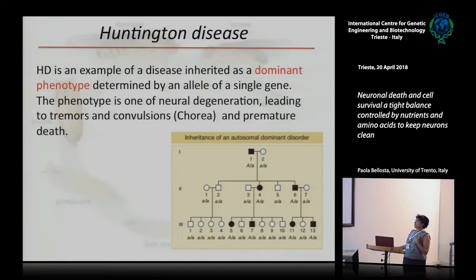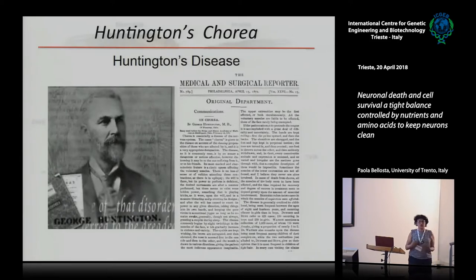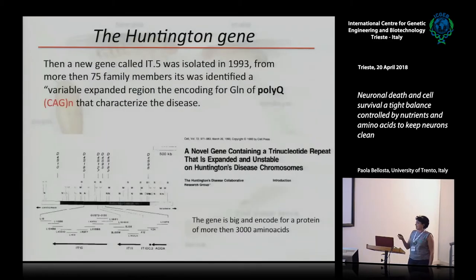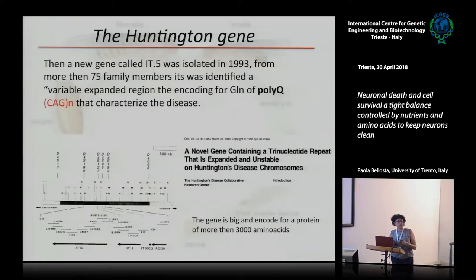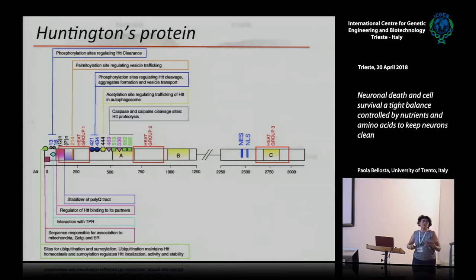A few words about Huntington's disease. It is a dominant genetic disease known since 1872, when Dr. Huntington noticed that some patients had this strange movement — chorea, like a dance. More than 100 years later the gene was identified. They found that specifically in Venezuela there were families with very high incidence of this disease, and they understood that the gene — and the protein from these patients — contained a poly-Q repeat that was very long compared to normal. In our case we normally have around 35 CAG repeats in the C-terminus of the huntingtin gene, whereas in the mutant protein the repeats are much longer — 36 or more.